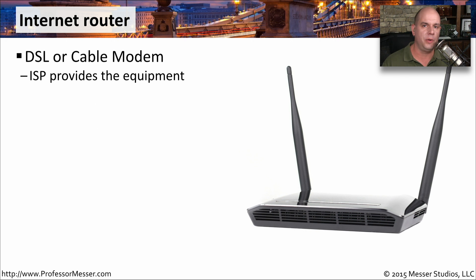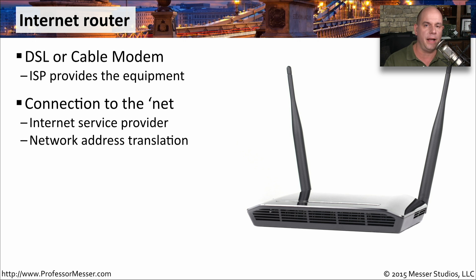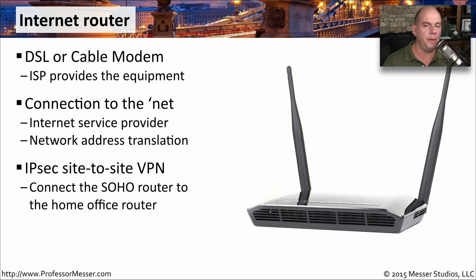The internet connection at these smaller locations may be very similar to what you have at home — it might be a DSL or cable modem connection. There may be differences in service from the provider, especially when you run into problems, though response time may be faster for a business-class connection. The ISP often provides the router themselves so they can configure and manage all the router connectivity, providing network address translation so anyone at your location can properly access internet resources. These internet routers may also be configured to provide VPN connectivity back to the remote site.